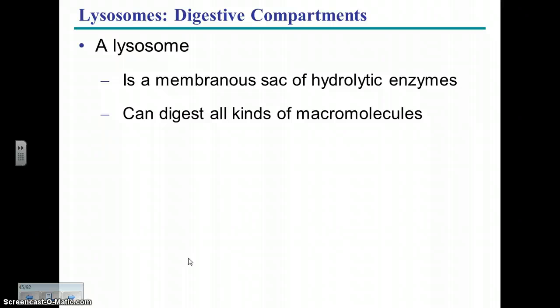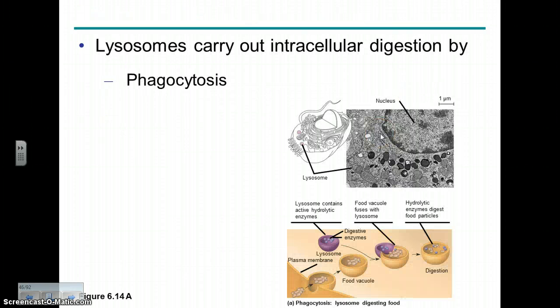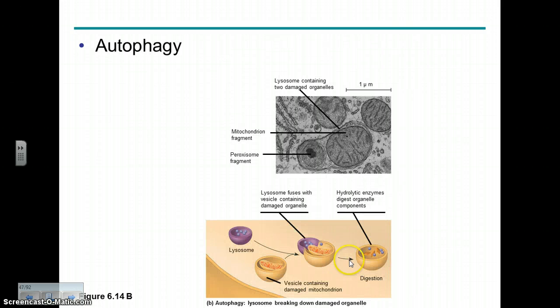A lysosome is a membrane-bound organelle containing digestive enzymes that come off of the Golgi. These hydrolytic enzymes digest things — for example, when a cell takes in a food vacuole, the lysosome fuses with it and those enzymes digest the food. Lysosomes are also involved with autophagy — breaking down old cellular components that need to be recycled, like an old mitochondrion.